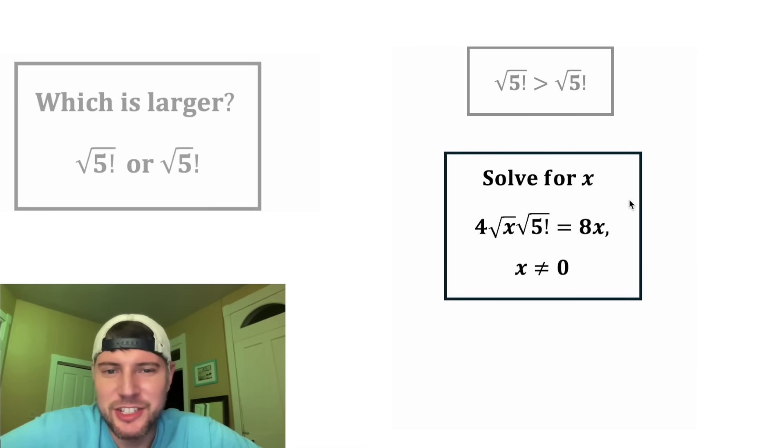And here's the next question. It says solve for x. So it's 4 times the square root of x times the square root of the quantity 5 factorial equals 8x. And x does not equal 0. This looks like a fun one. How exciting. Thank you.